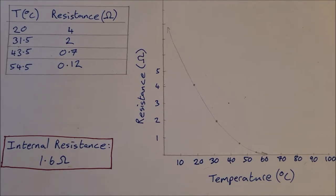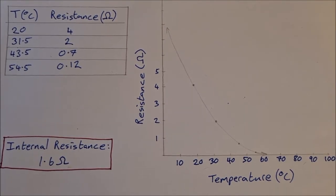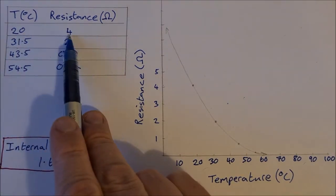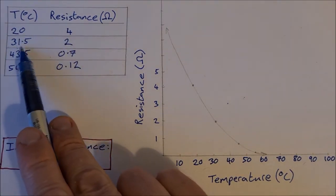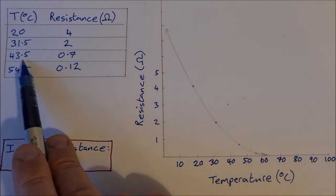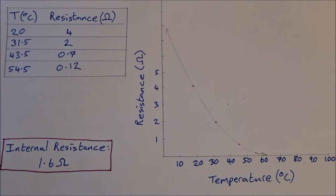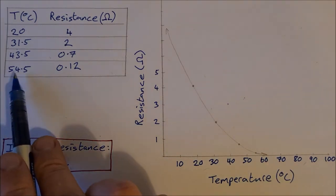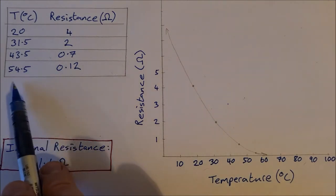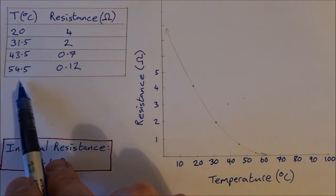So to analyze the results of the variation of the resistance of a thermistor, we have our points here. At 20 degrees we had a resistance of 4. At 31.5 degrees, a resistance of 2 ohms. At 43.5 degrees, we had a resistance of 0.7 ohms. And at 54.5 degrees, we had a resistance of 0.12 ohms. We weren't able to go any further than that; the resistance of that thermistor reached a minimum at around about that temperature.